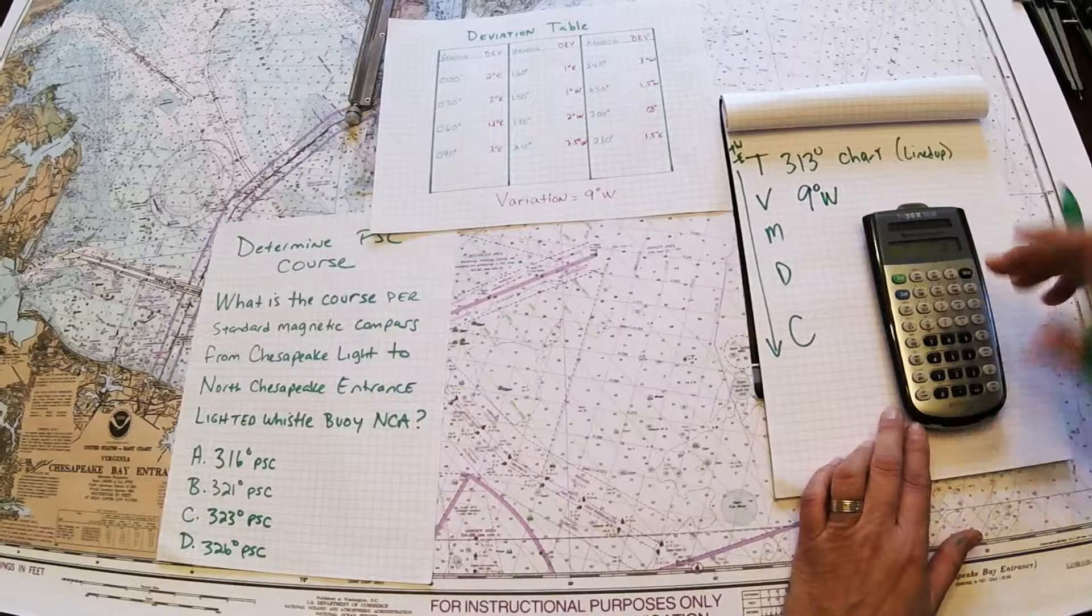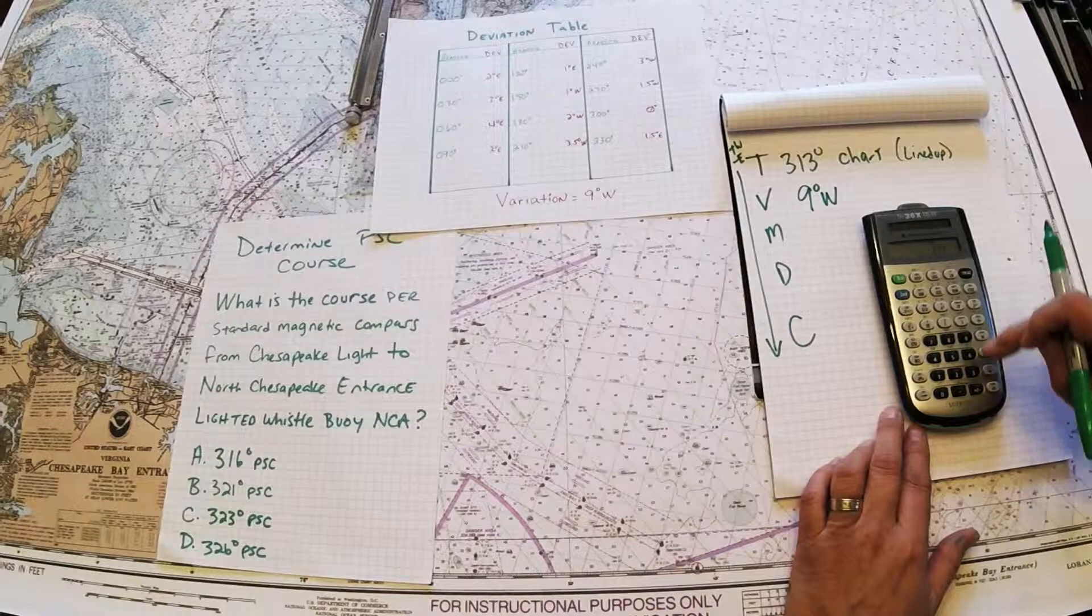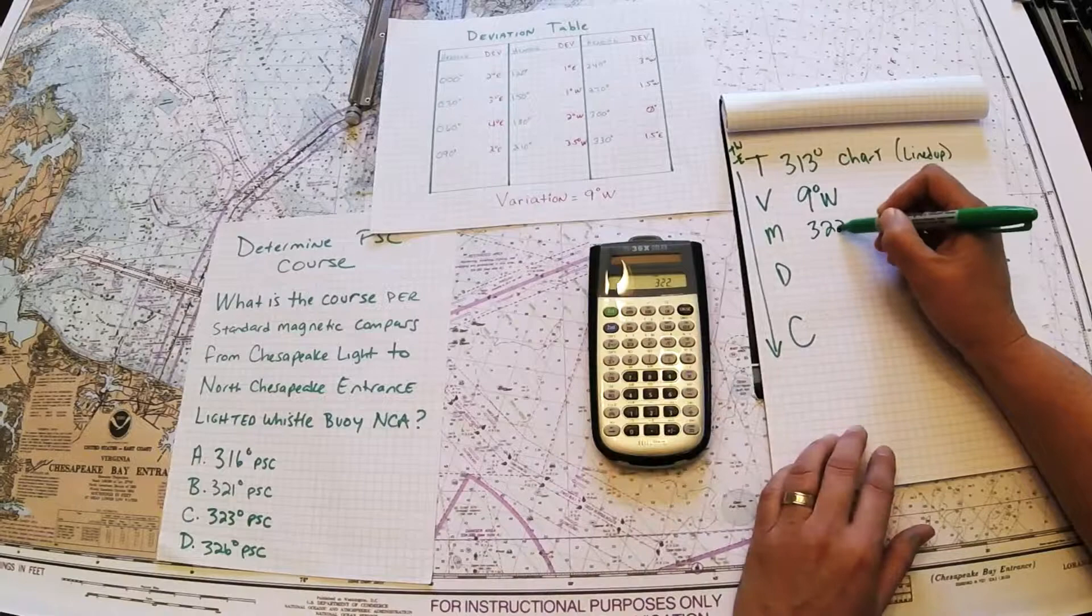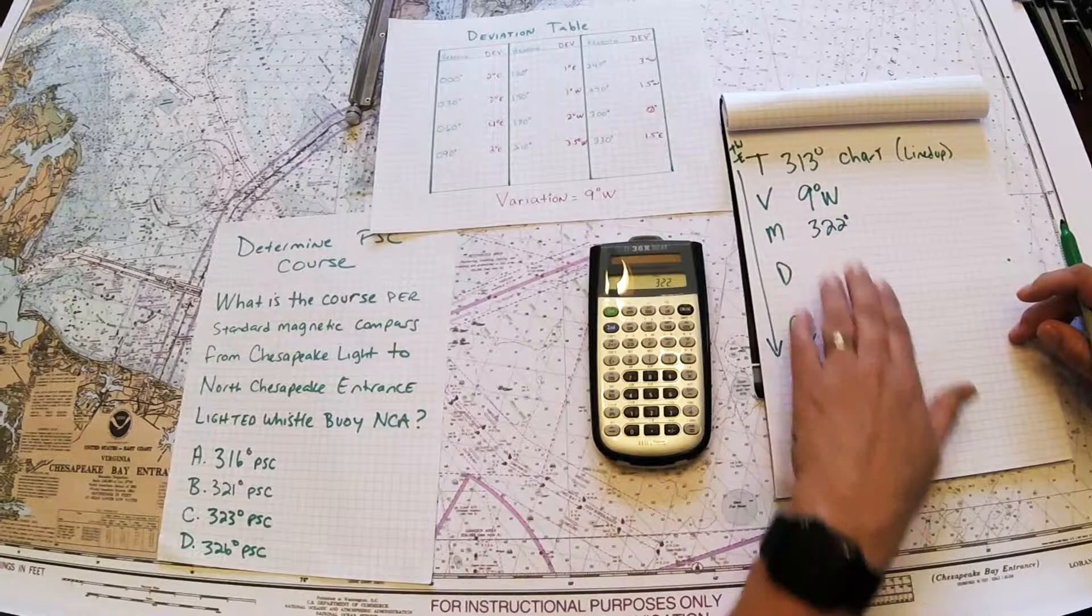Because I'm going down in the problem, we add west. 313 plus 9 gives us 322. 322 would be what the true direction is based on magnetic north. But we need per standard compass on the boat.